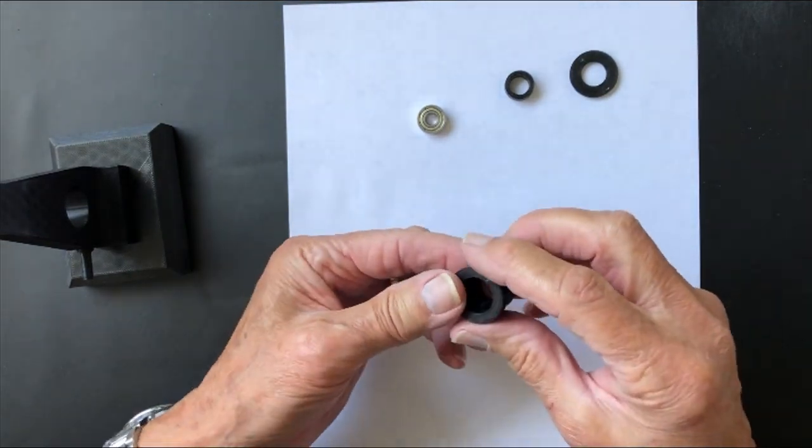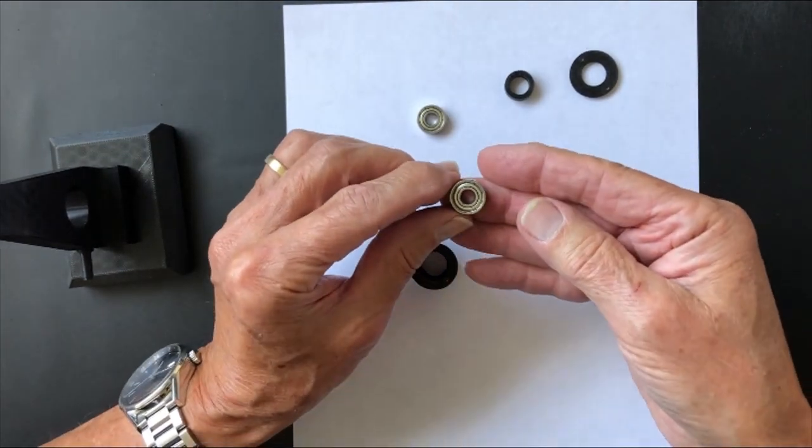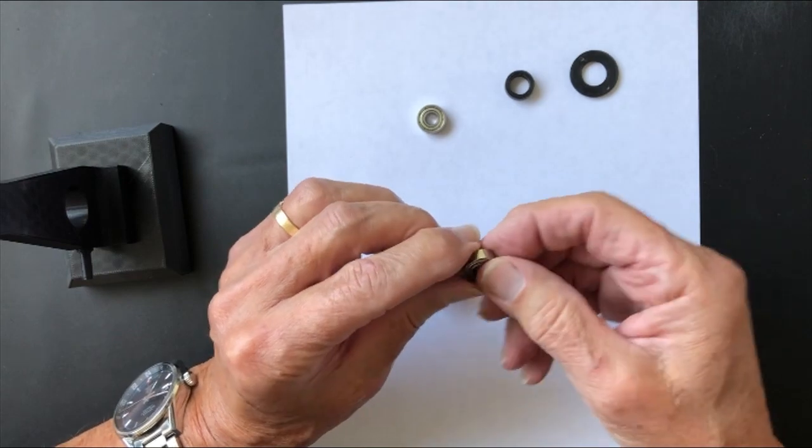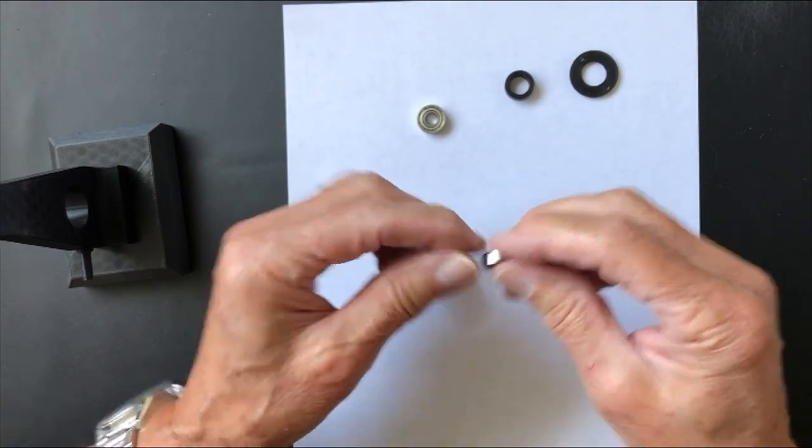This is the bearing housing. We're using Z969 bearings which are 5mm wide with a 6mm core, 15mm OD.